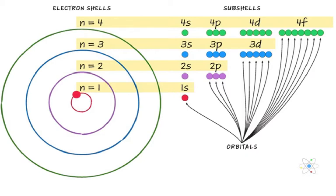Rutherford's model had a key flaw: electrons have electric charges, which means when they move around in their orbits of the nucleus, they radiate energy. Losing this energy would cause them to fall into the nucleus and make it impossible for the atom to be stable.